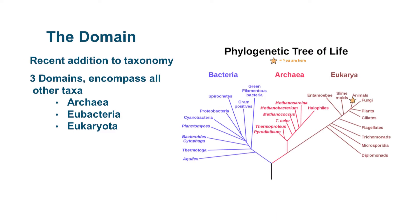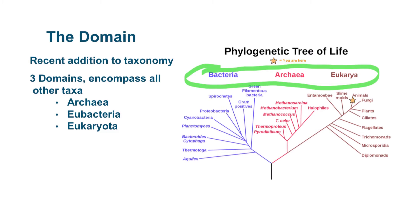Actually, there is a taxon that is more inclusive than kingdom, but it has only been recently determined. This is something that is only newly being taught in biology courses. There are now three domains in which all kingdoms and other taxa fall into. There are the Archaea and the Eubacteria, which are both prokaryotic, and then there is the Eukaryota, or Eukarya depending on the source you look at, which includes all of the eukaryotic organisms.